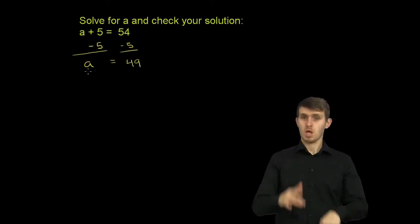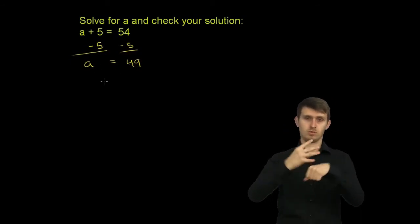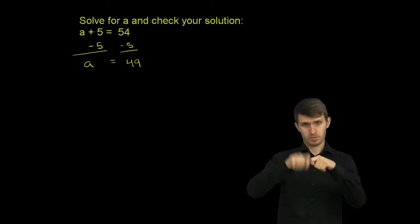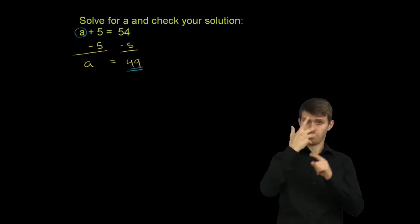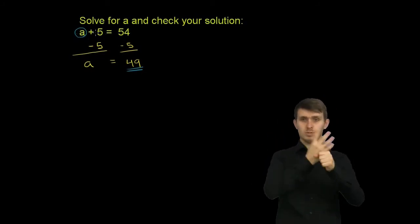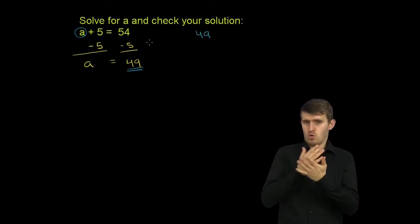And we're done. We have solved for a. a is equal to 49. And now we can check it by just substituting 49 back for a in our original equation. So instead of writing a plus 5 is equal to 54, let's see if 49 plus 5 is equal to 54.